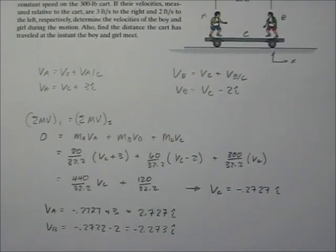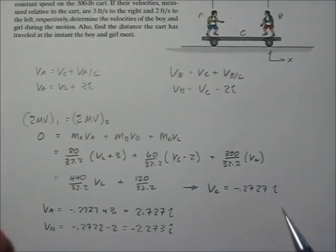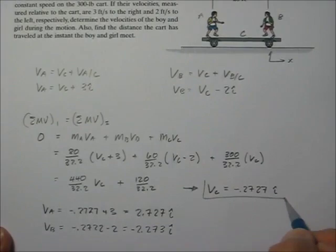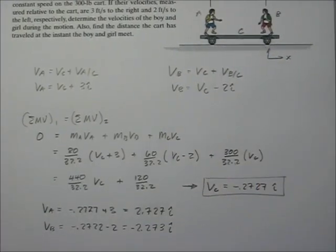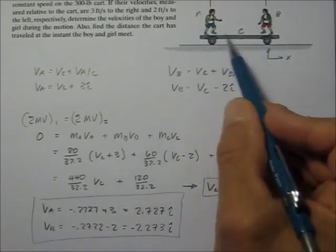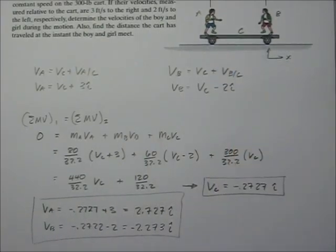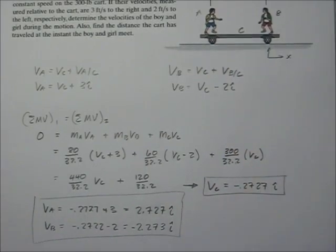You can do the math and verify. Here are the three velocities: the cart is actually going in the negative i direction. The boy is going in the positive i direction, which we'd expect. The girl is going in the negative i direction, which is also what we'd expect.